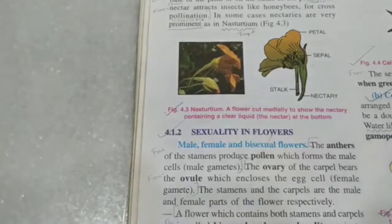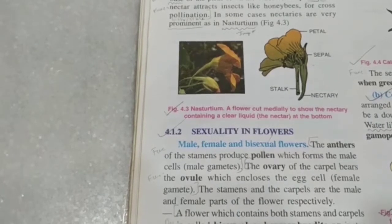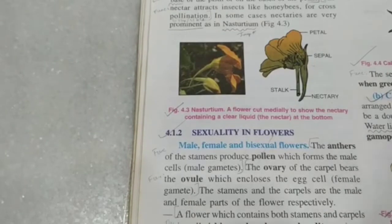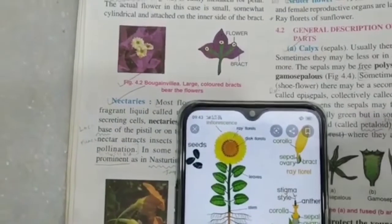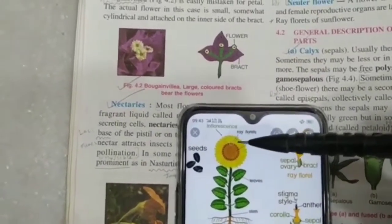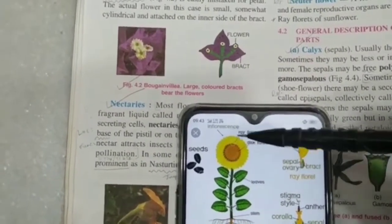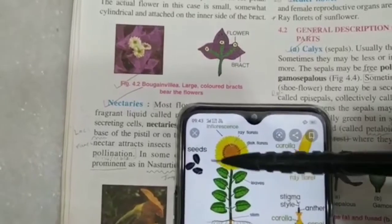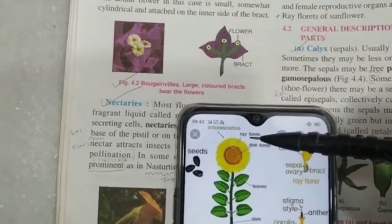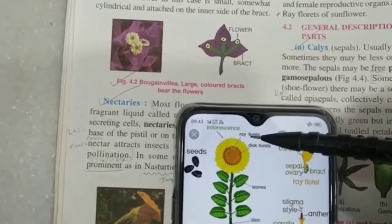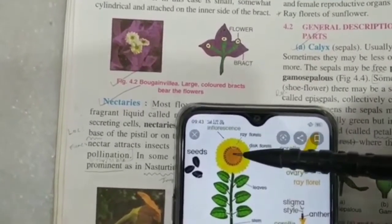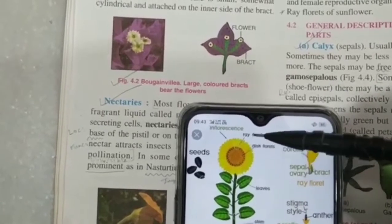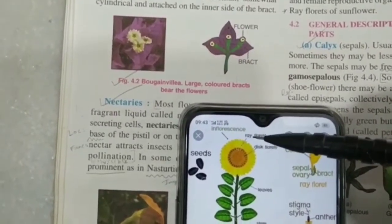Some flowers have neither male nor female reproductive organs — they are called neuter flowers. For example, the ray florets of a sunflower. The sunflower is actually a combination of many flowers together. The ray florets at the periphery cannot reproduce because they lack male and female parts, which are present only in the central flowers. The ray florets simply attract insects for pollination.